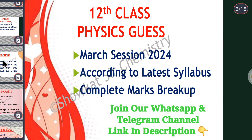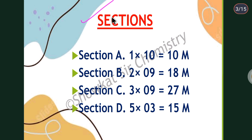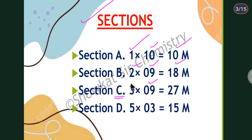Let's start. Your question paper will consist of four sections. Section A will have one-mark objective-based, very short answer type questions — 10 questions, so 10 marks. Section B will have 9 questions carrying 2 marks each, totaling 18 marks. Section C will have 9 questions carrying 3 marks each, totaling 27 marks. Section D, the very long answer type, will have 3 questions carrying 5 marks each, totaling 15 marks.